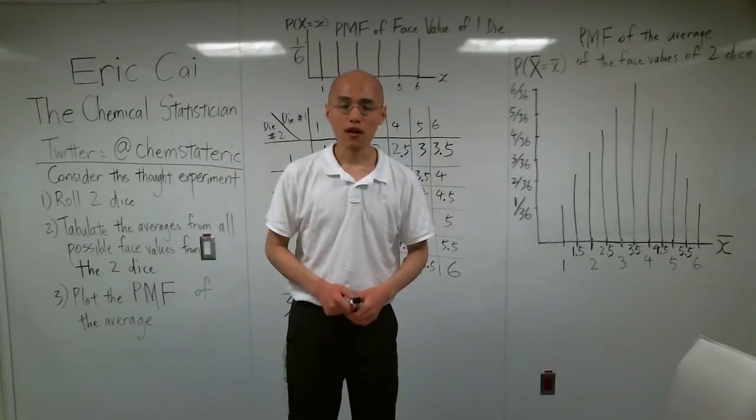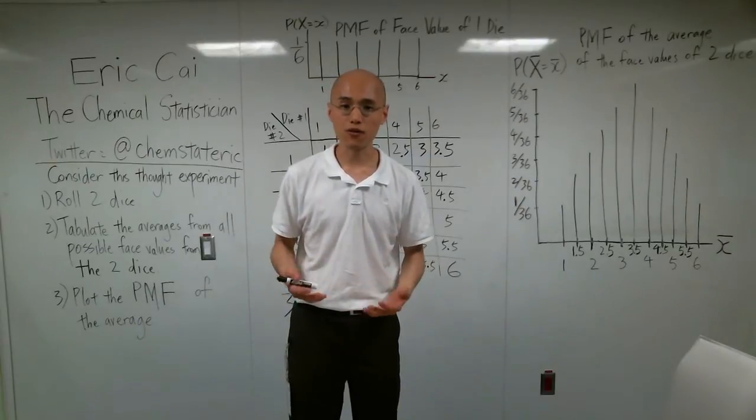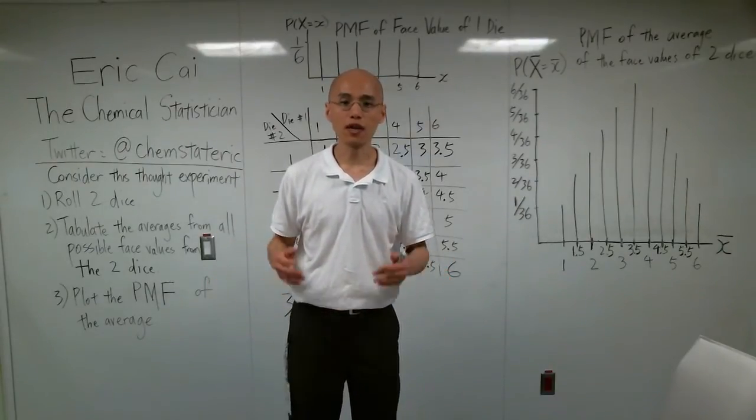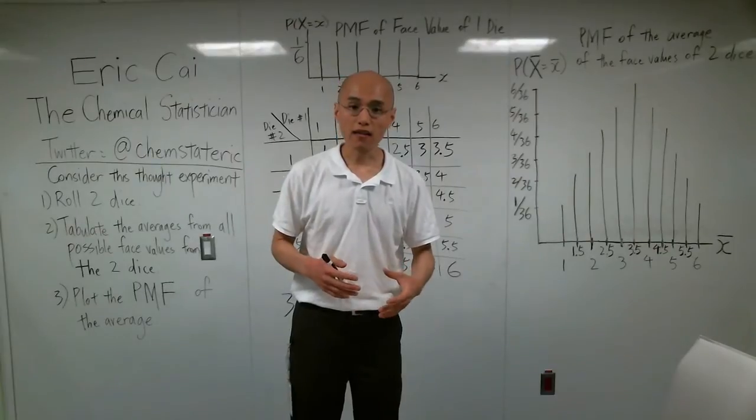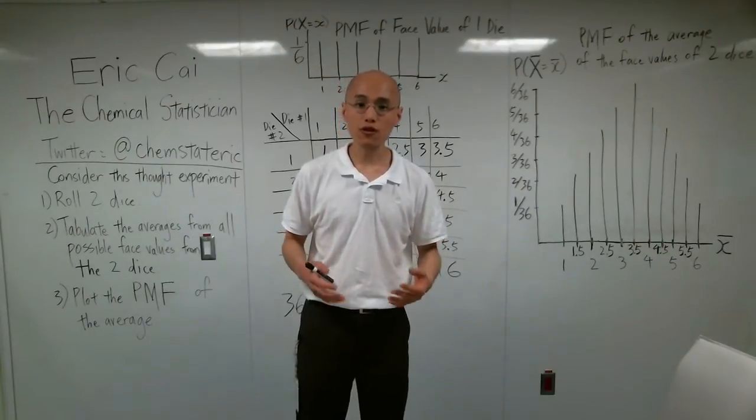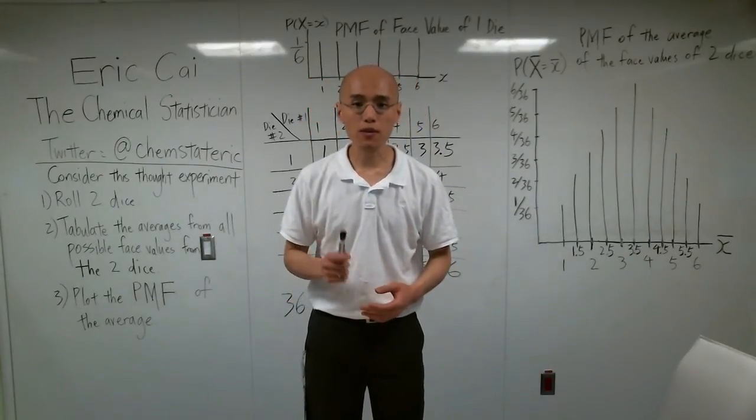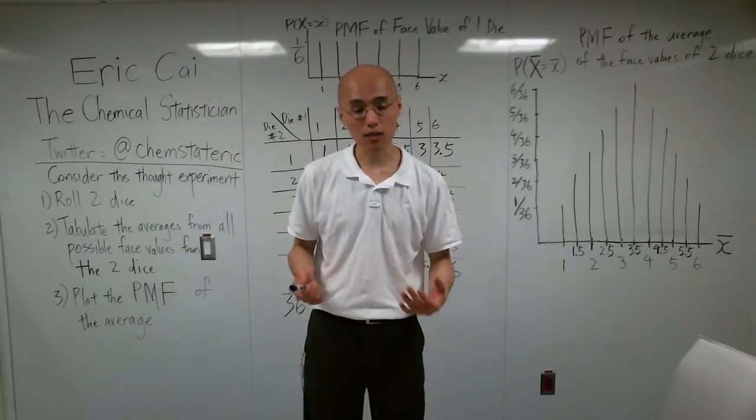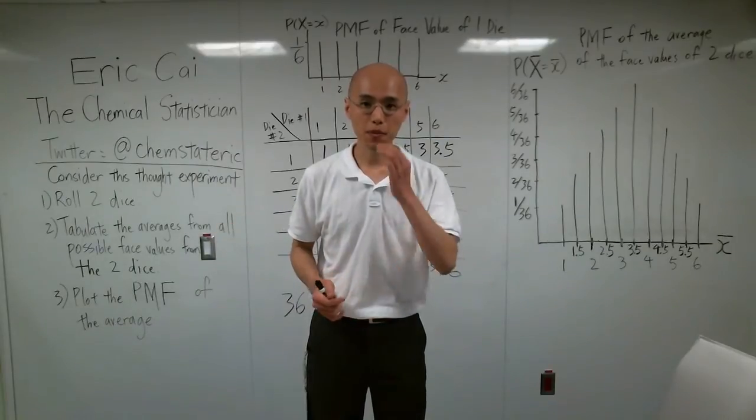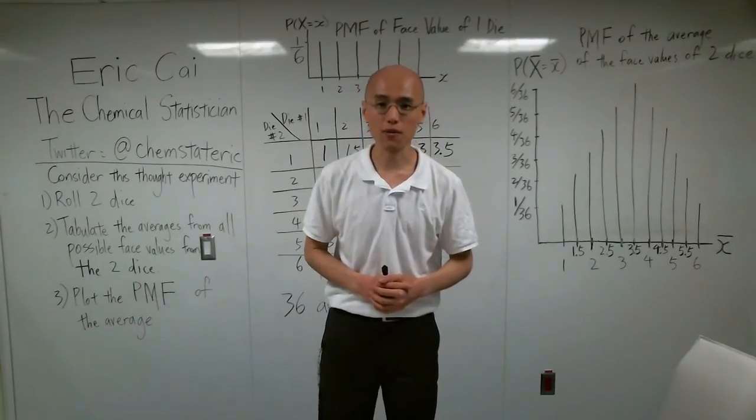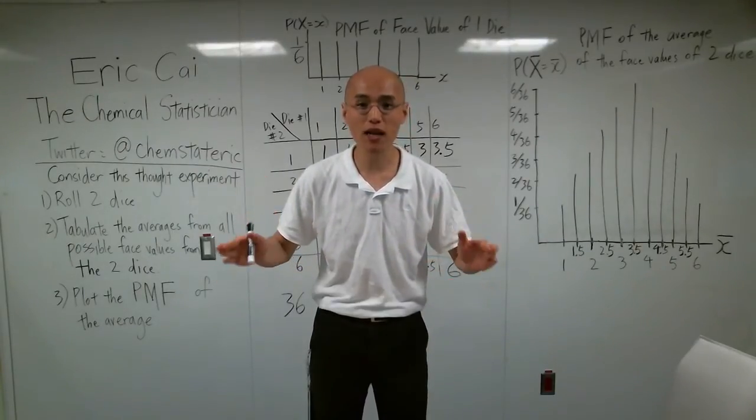And that is a manifestation of the central limit theorem, the most important concept in all statistics. Remember, the central limit theorem says that if you have n random variables and they're independent and identically distributed, and if n is big enough, then the distribution of the average or the sample mean of those n random variables will be approximately normal. And that approximation gets better as n gets bigger, as you have more random variables in that sample. And here's the astonishing thing about the central limit theorem. That theorem is true no matter what the parent distribution of the original random variables is.